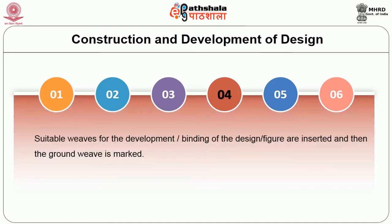The fourth stage is the introduction of a suitable weave for the development of the design. Weaves have to be selected according to the emphasis of each and every component of the design — that is again a tedious process. You have to select the weaves for each component, insert the weaves, and also mark the ground weaves for the development of the jacquard design.